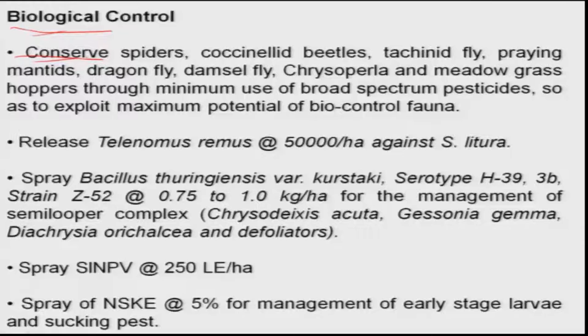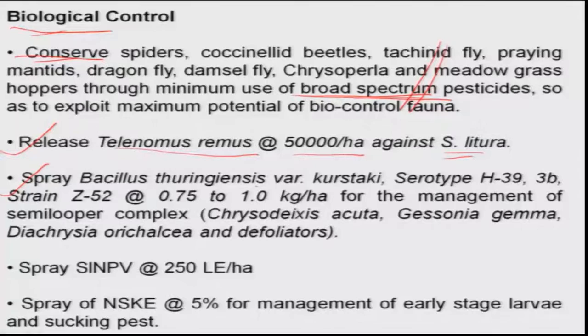Among biological control measures, conservation of natural enemies is most important because the soybean ecosystem includes many predaceous insects — spiders, Chrysoperla, tachinid flies, and dragonflies — which should be conserved by avoiding broad-spectrum insecticides. Release of the egg parasitoid Trichogramma spp. at 50,000 per hectare is recommended particularly against Spodoptera litura. Microbial insecticide sprays of Bacillus thuringiensis, available commercially under various trade names, are recommended against defoliators and semilooper. Spodoptera NPV at 250 LE per hectare is also recommended when Spodoptera is a problem.